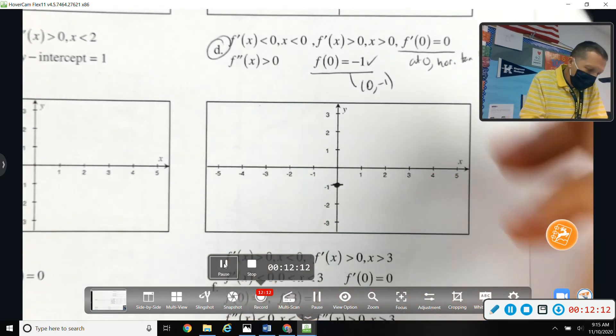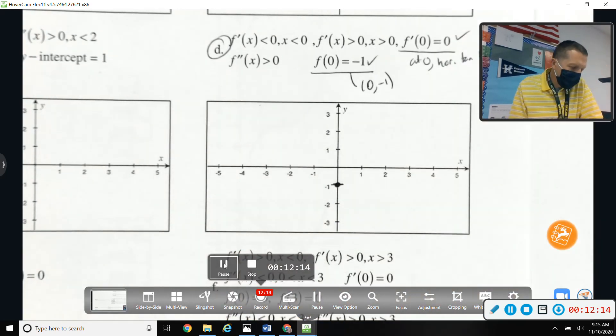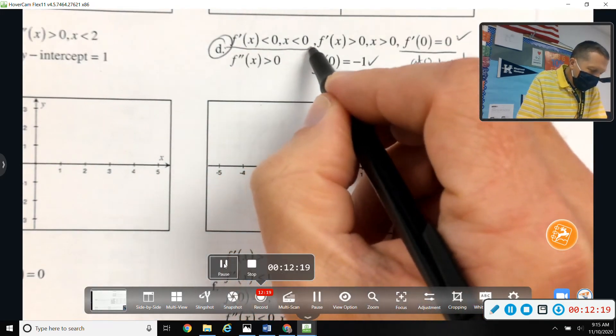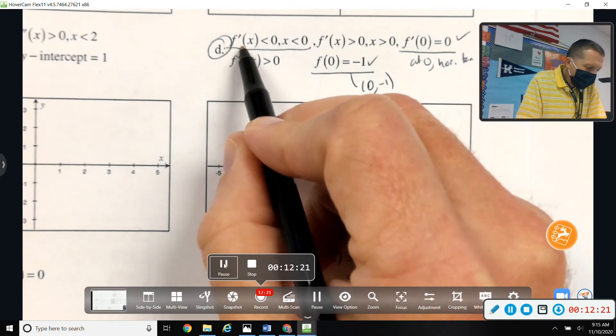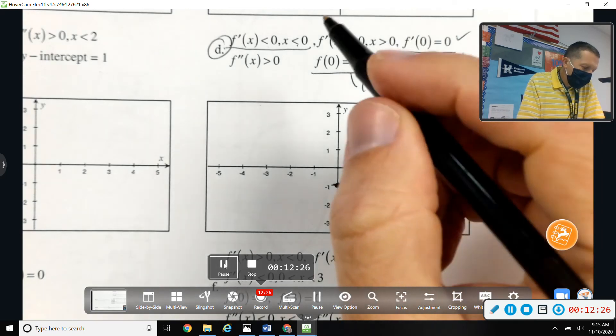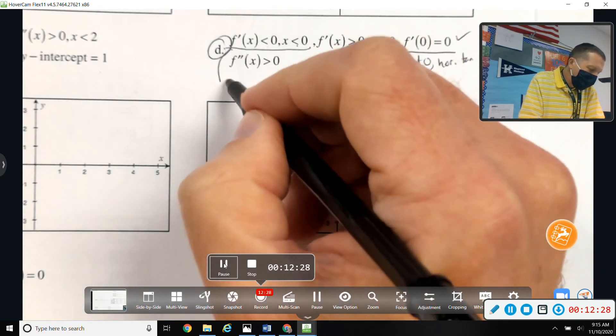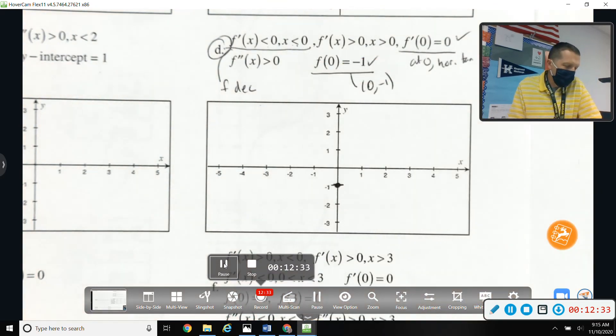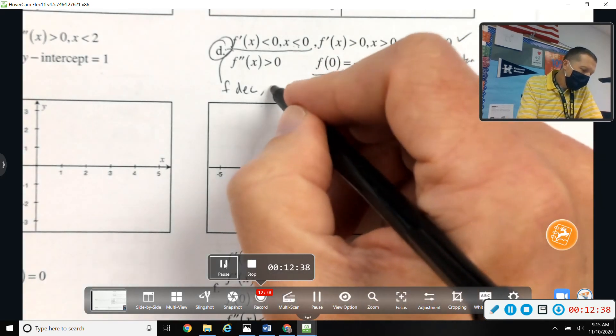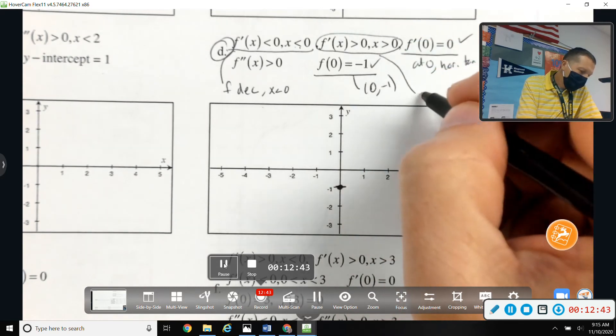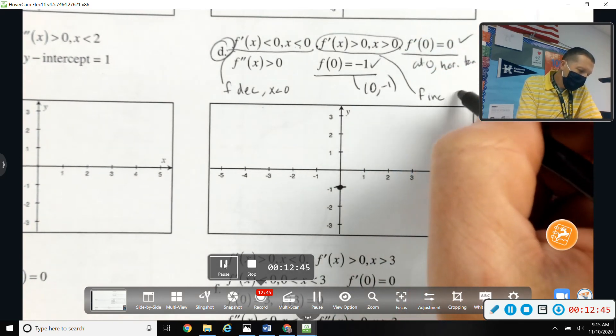Okay, so we've kind of handled both of those. Let's see, f prime is less than 0 when x is less than 0, so that means that f is decreasing when x is less than 0.